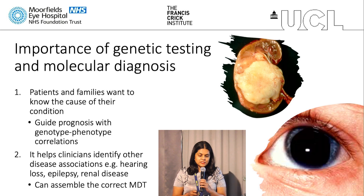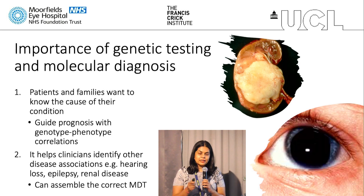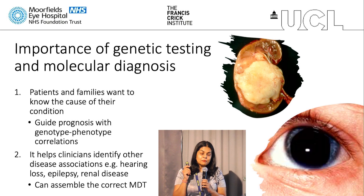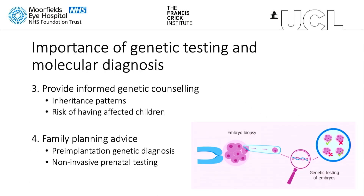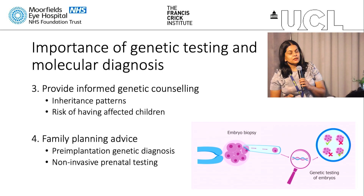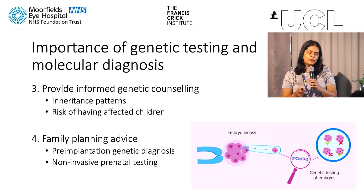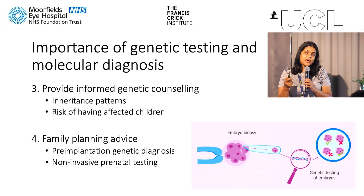Those genes will have different expression patterns in the body and give rise to different potential systemic implications. We can assemble the correct multidisciplinary team at a very early stage in that patient's journey so that we can minimize any comorbidities arising from those other system involvements. We can provide informed genetic counseling to individuals and parents, explaining how the condition was inherited, what the risk of having future children may be, and the risk of that individual having more children in the future.